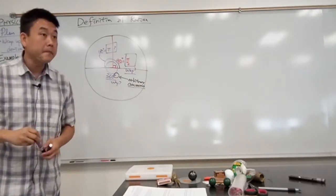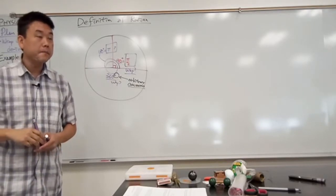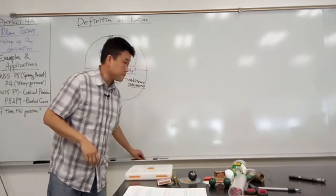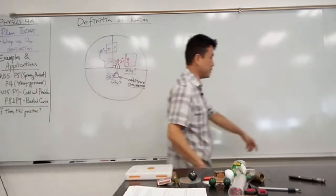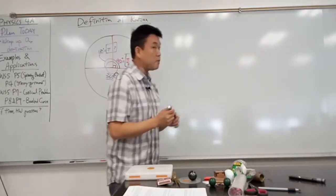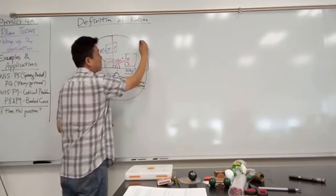One radian is the angle where the arc length is equal to radius. So one radian is equal to where the arc length is equal to radius. And the key word that I want to highlight here is the arc length.